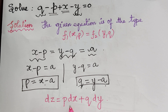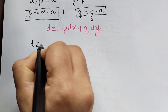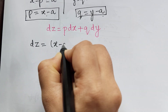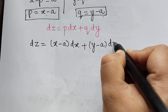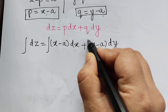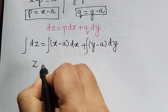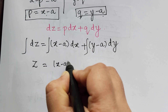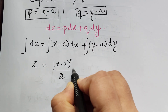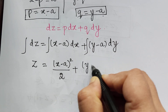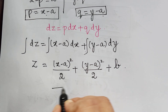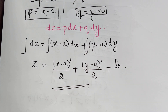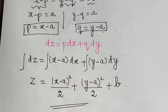Substituting p and q, we get dz = (x minus a) dx + (y minus a) dy. Integrating on both sides: z = (x minus a)² / 2 + (y minus a)² / 2 + b. This gives us the complete solution. Hope you have understood both the problems. In our next video we will solve Problem 3, so kindly follow the next video lecture. Thank you.